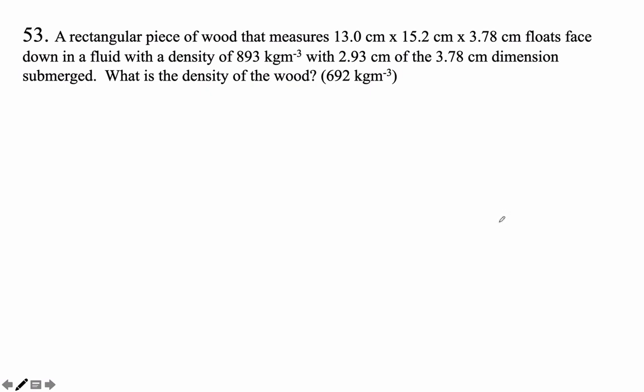A rectangular piece of wood that measures 13 by 15 by 3.78 centimeters floats face down in a fluid with a density of 893 kilograms per cubic meter, with 2.93 centimeters of the 3.78 centimeter dimension submerged. What is the density of the wood?